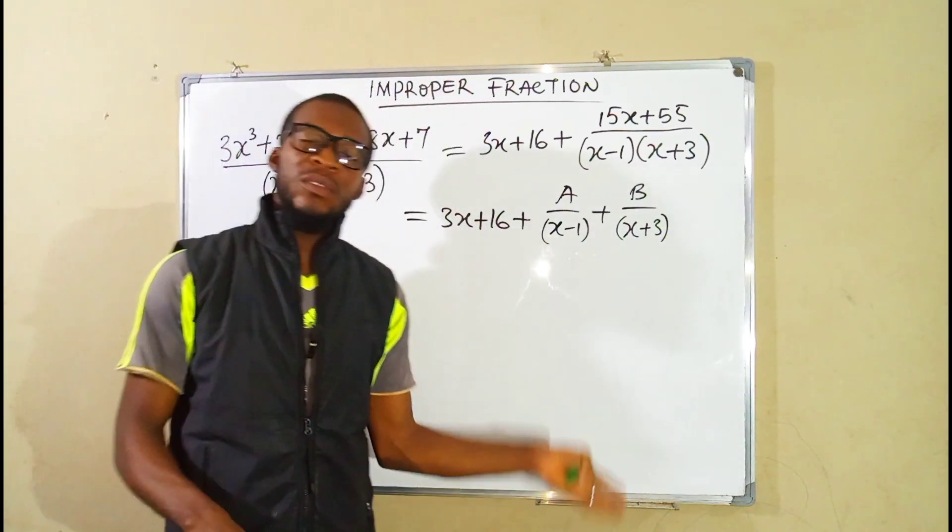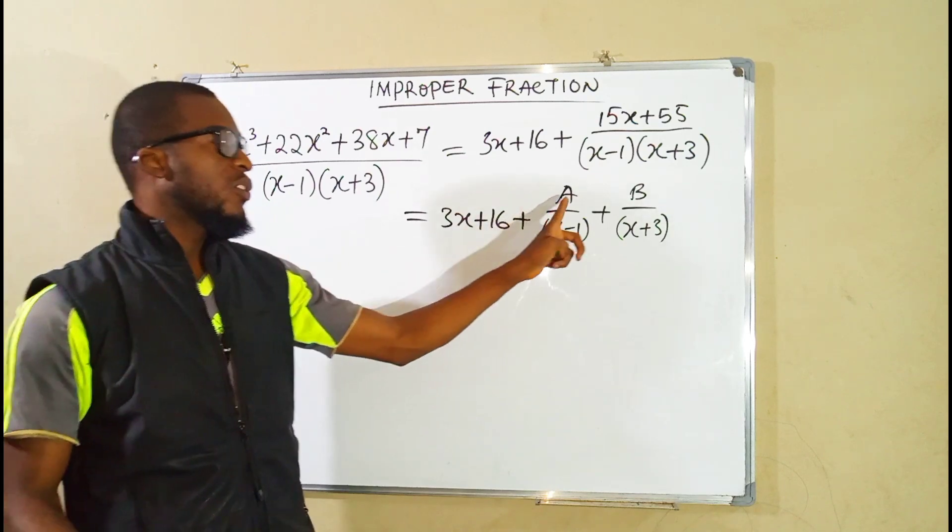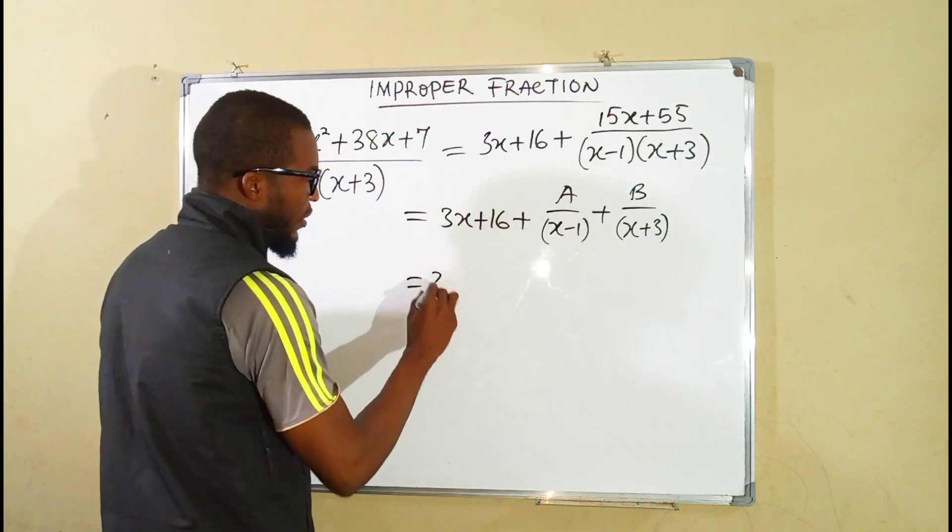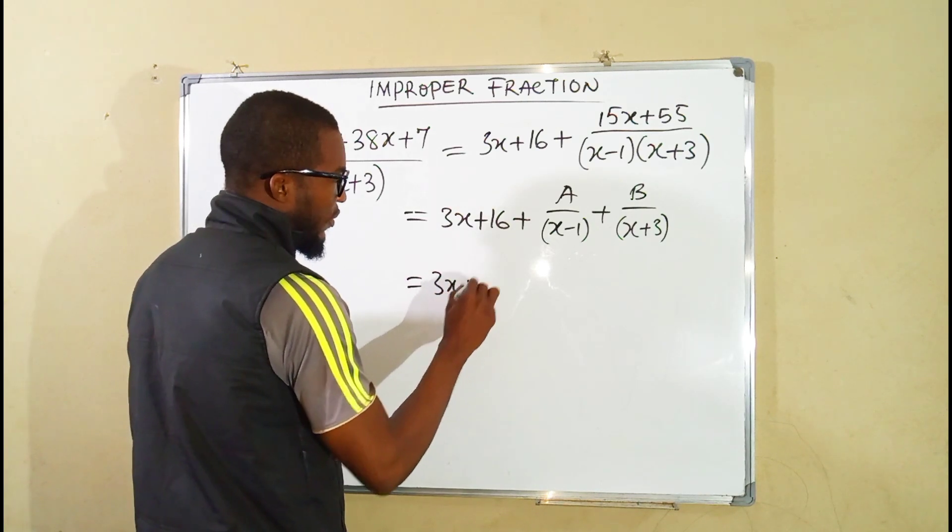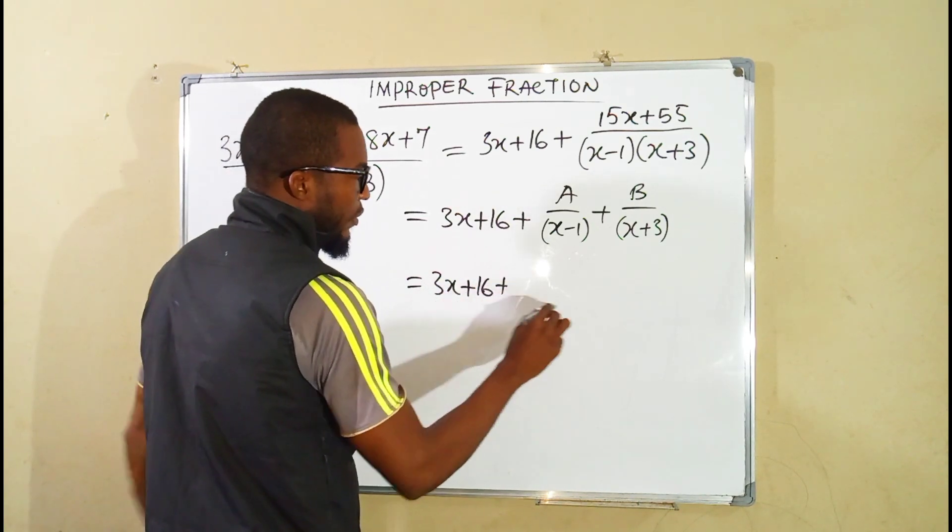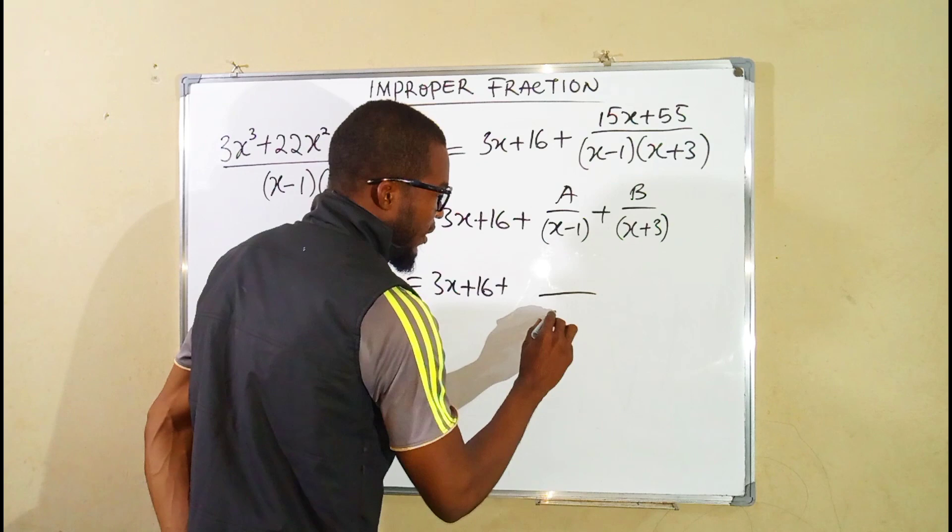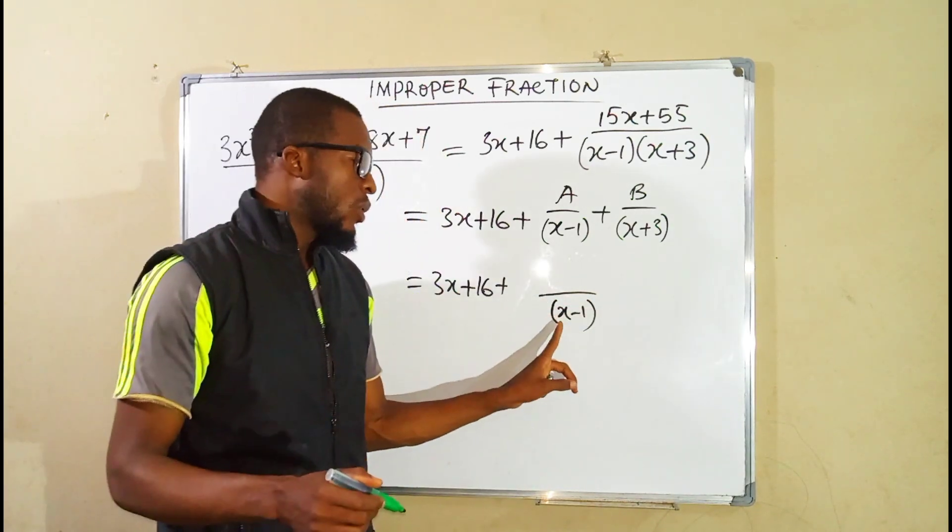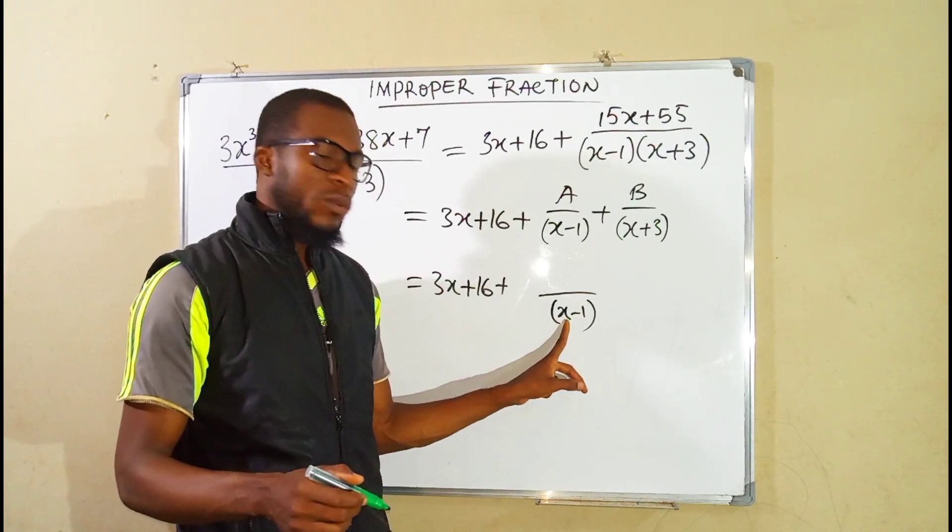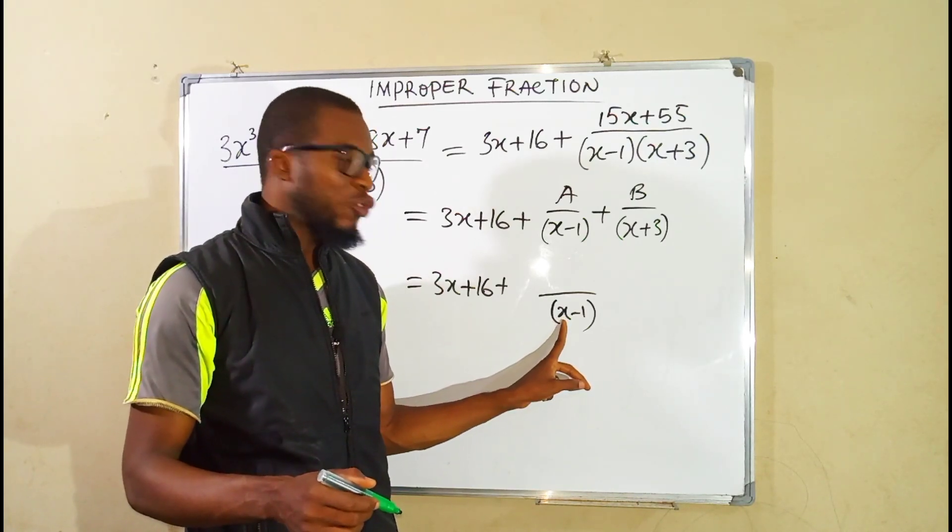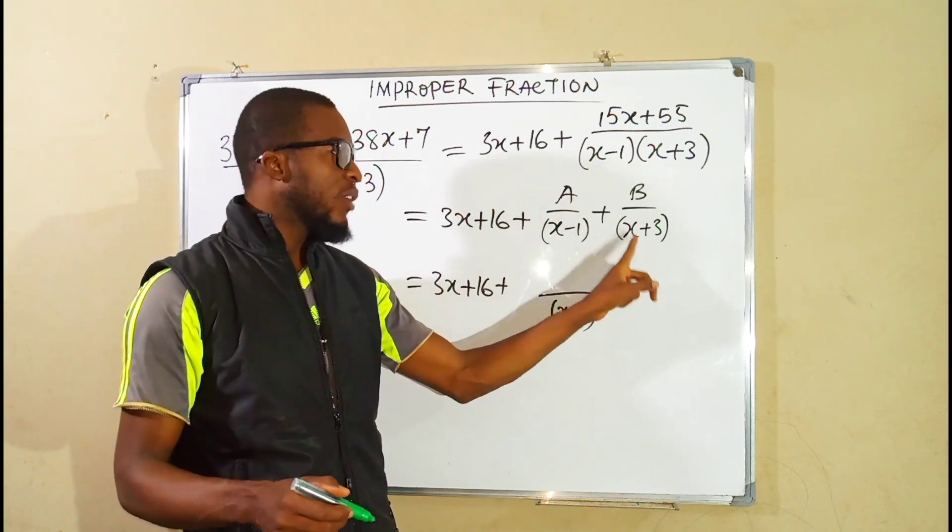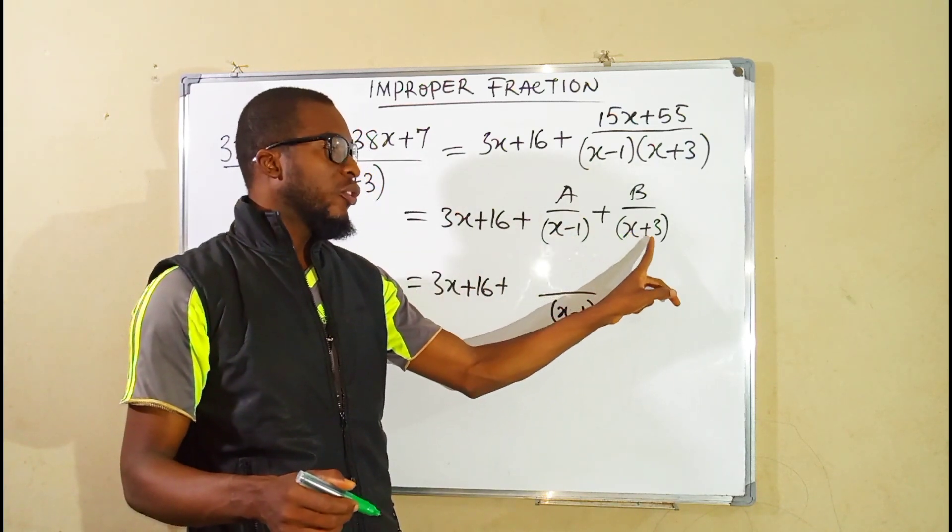In order to minimize time let me use cover out method to find the corresponding values of A and B. So this is equal to 3x plus 16. Then plus we are going to cover out x minus 1 here. To transform this factor into 0, the value of x has to be equal to 1. And we are going to substitute that 1 into the other factor.